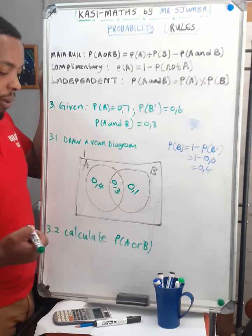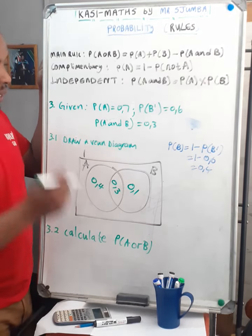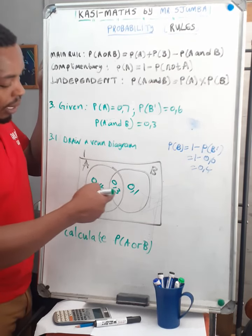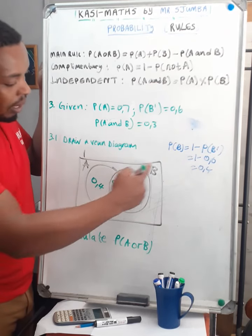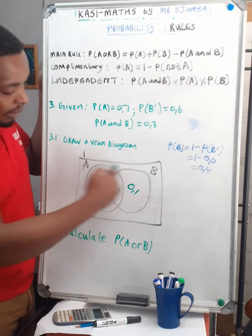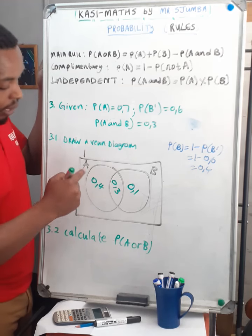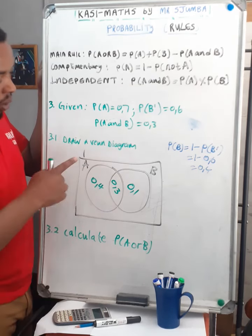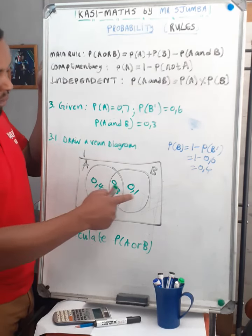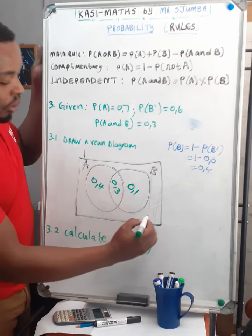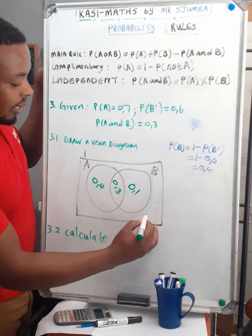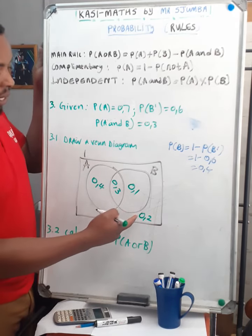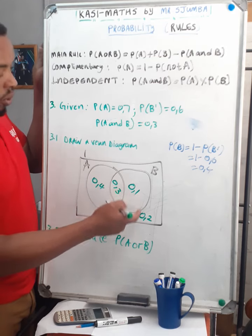Since the whole B circle is 0.4 and the intersection is 0.3, the part of B outside the intersection is 0.4 minus 0.3 equals 0.1. The region outside both circles in the rectangle is 1 minus 0.4 minus 0.3 minus 0.1, which equals 0.2.